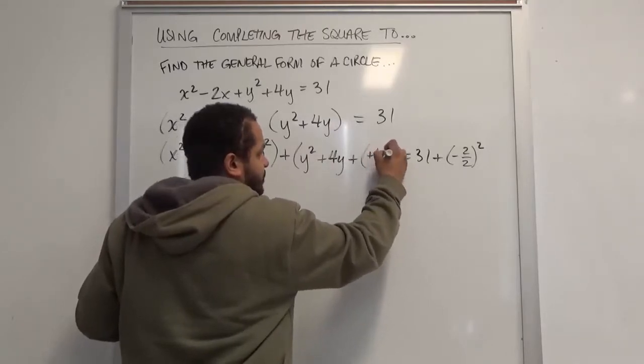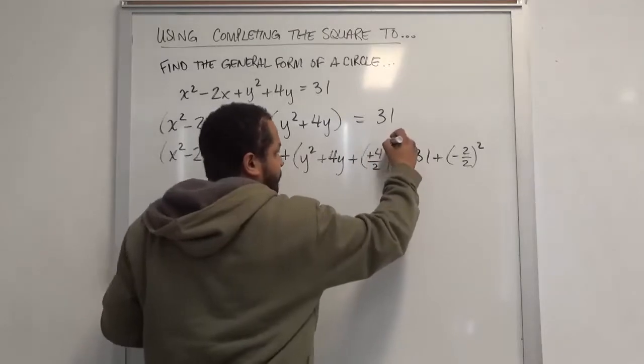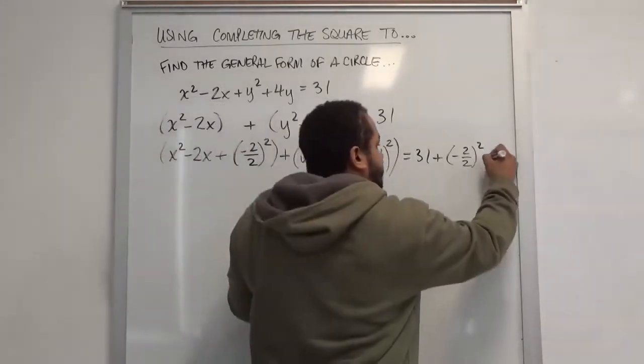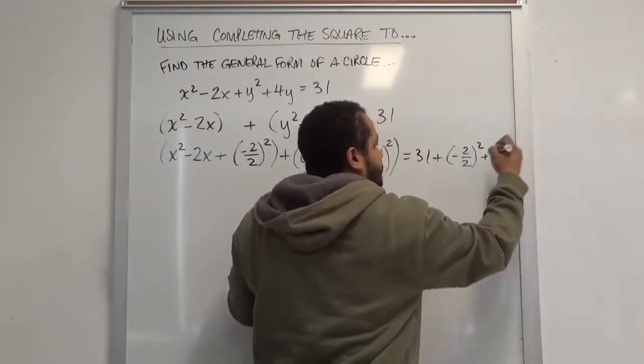This is a positive 4, just for notary purposes. We're going to leave that squared. We're adding that same term to this side, which is a positive 4 divided by 2 being squared.